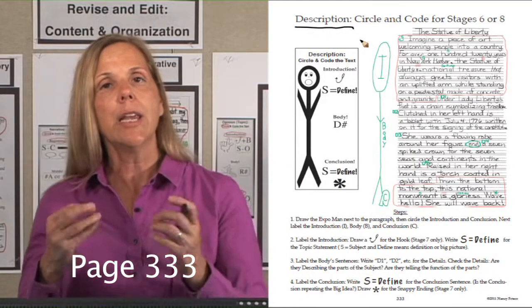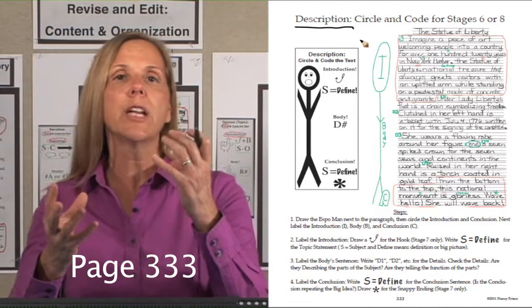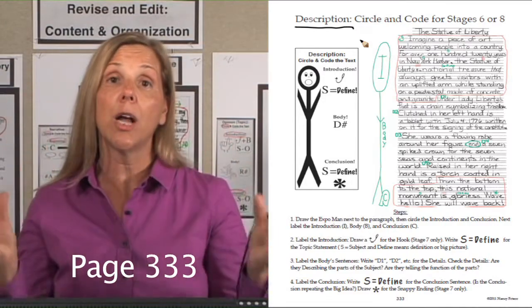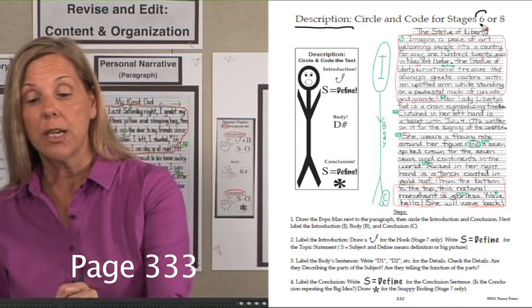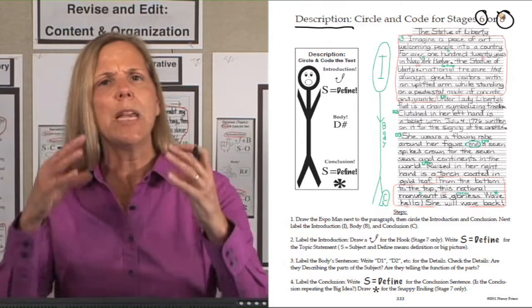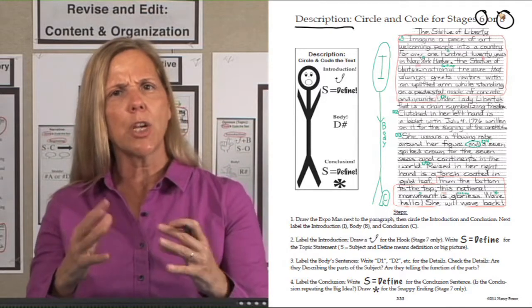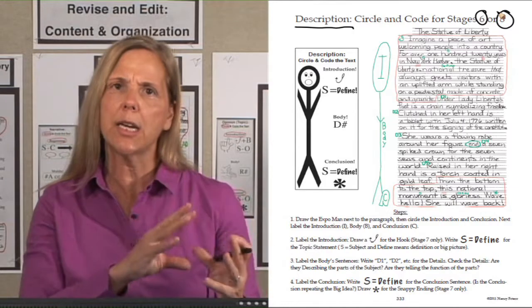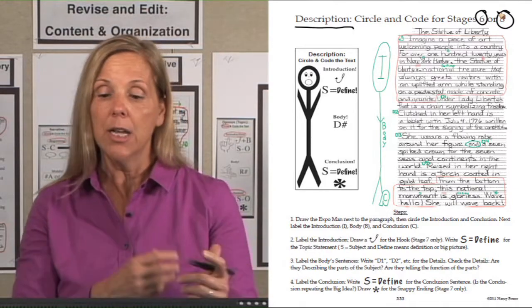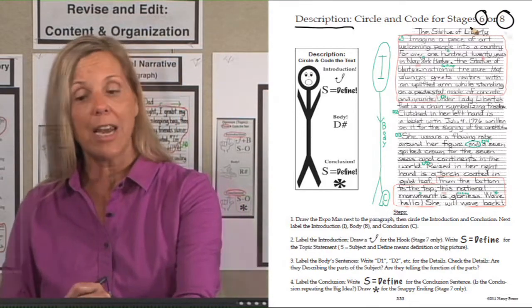Description writing is under the informative explanatory umbrella. It was taught in separate stages, stages six and stages eight, because how you write a description is different than the informative explanatory sequencing and category type of writing. So we had to give them separate stages.